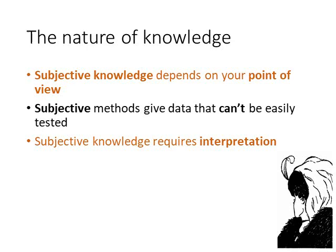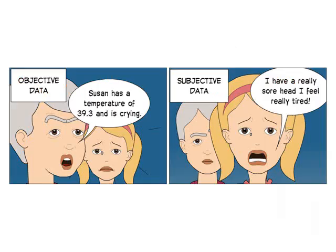Subjective knowledge, by contrast, depends on your point of view. Subjective methods give data that can't be easily tested — that is, verified or falsified. Subjective knowledge requires interpretation. When you know something subjectively, it is true to yourself, but someone else may not see it that way. So it is not objective and absolute; it is subjective and personal.